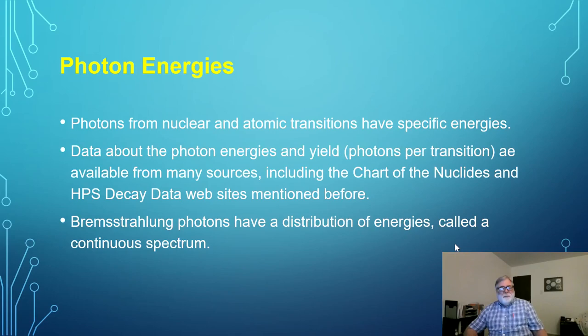Next week we're going to talk about how charged particles interact with matter. Bremsstrahlung is a result of a charged particle — an electron — interacting with matter, so we're getting a head start on it now as a source of X-ray photons. Next time we'll talk about it as a way electrons give up energy in matter. These are the sources for photons: either gamma rays from the nucleus or X-rays from the atom.